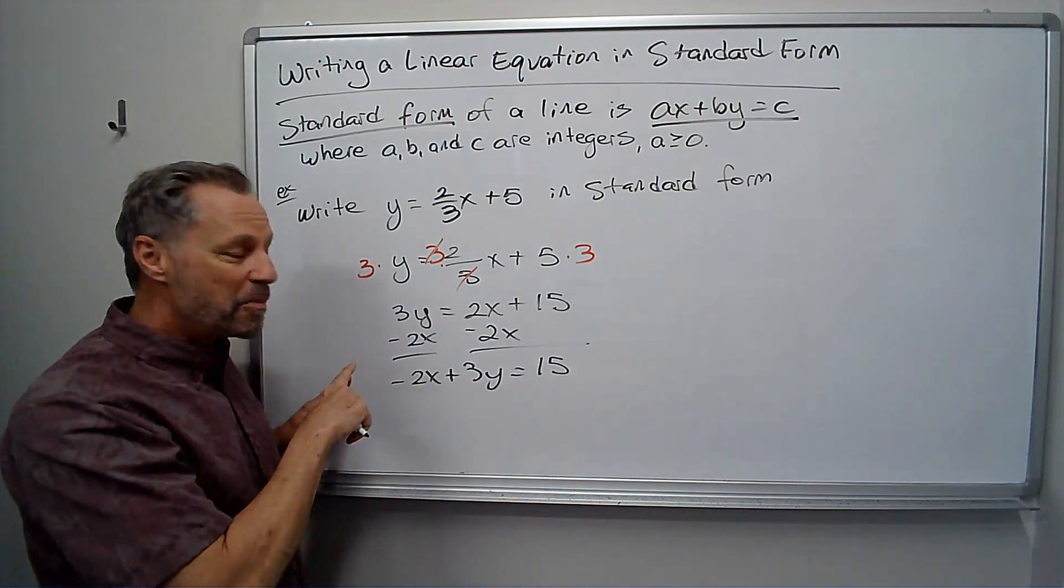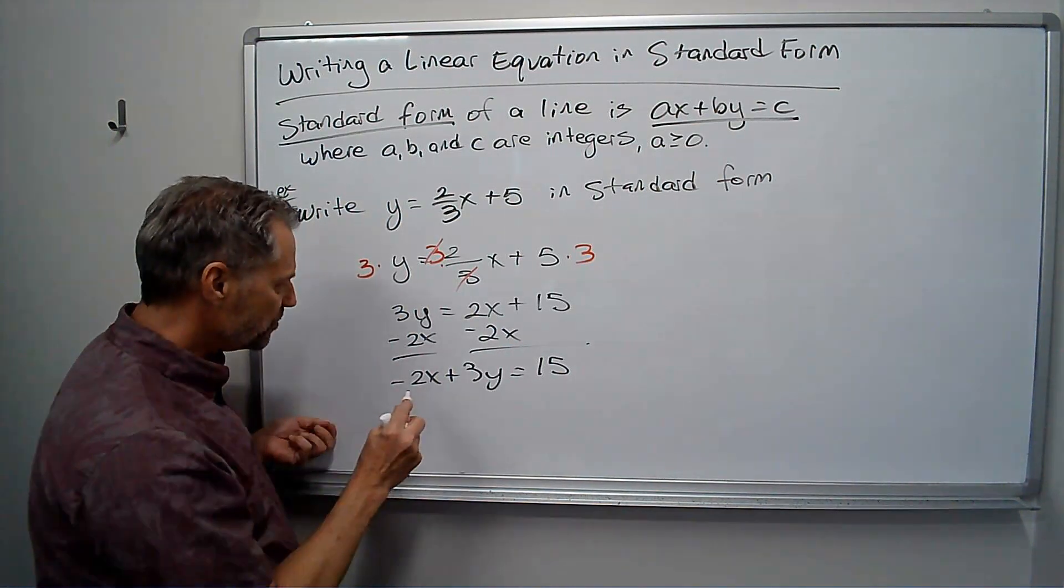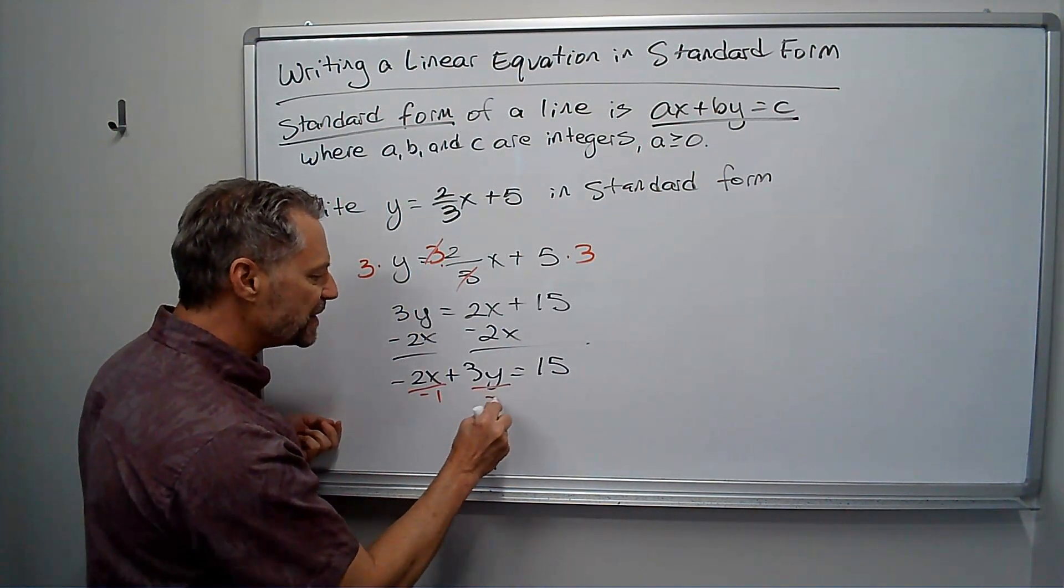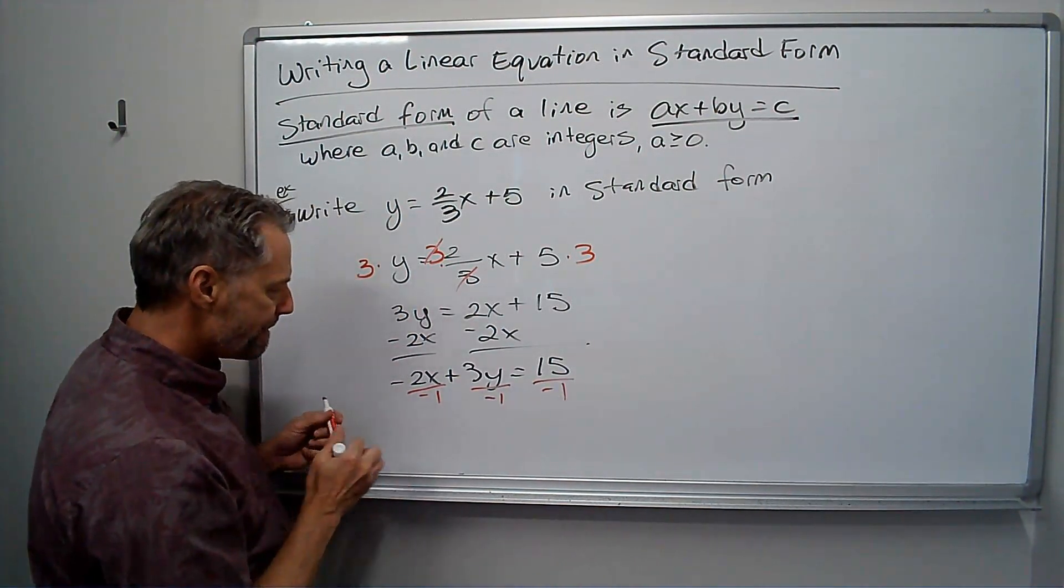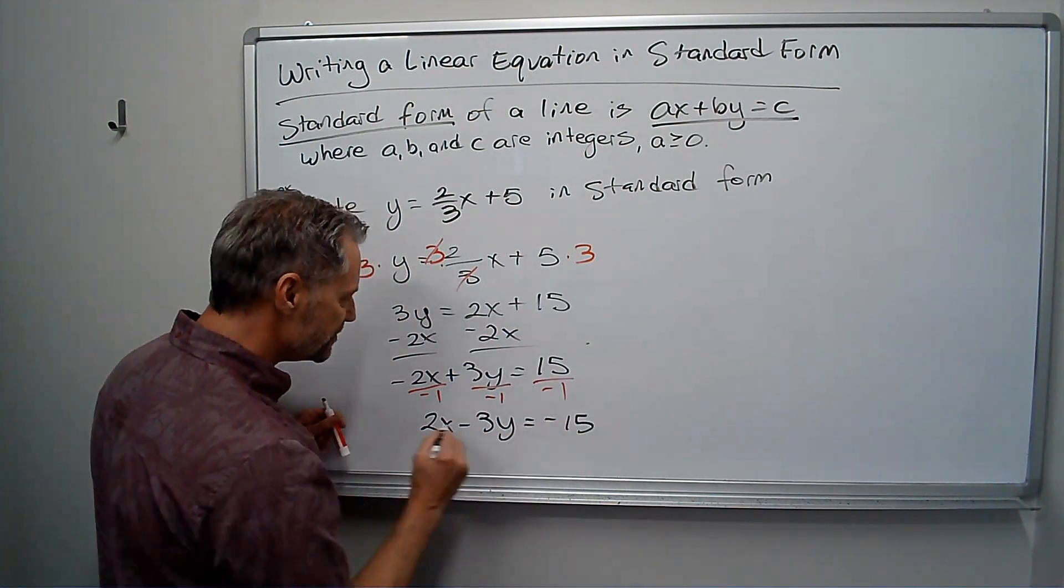And I'm almost done, but remember that X coefficient can't be negative, so I have to divide by negative one. I have to divide each term by negative one. So now I get two X minus three Y equals negative 15.